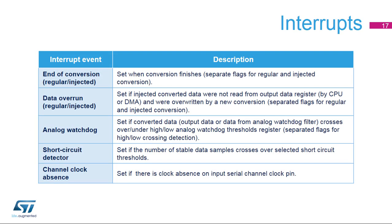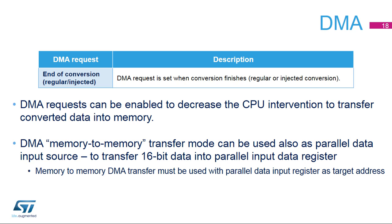A set of interrupts related to DF-SDM events has been implemented to increase CPU performance. This table lists all DF-SDM interrupt sources: end of conversion events with separate flags for regular and injected conversions, data overrun events with separate flags for regular and injected conversions, analog watchdog events, short circuit detector events, and channel clock absence event. To decrease CPU intervention, conversions can be transferred into memory using DMA transfer. DMA transfers for injected and regular conversions can be enabled separately. The DMA can also be used for fast data transfers into parallel data registers, configured in memory-to-memory transfer mode where the target address is the parallel input data register.